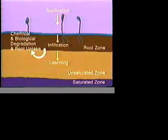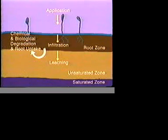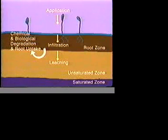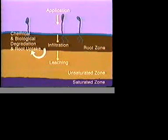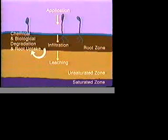Where preferential flow does occur, predictive models that do not consider preferential flow can give fairly accurate predictions for the concentration of fertilizer nitrates that end up in the groundwater. This is because a large percentage of the amount of nitrates applied must reach the water table to cause contamination.